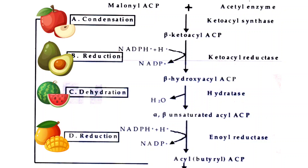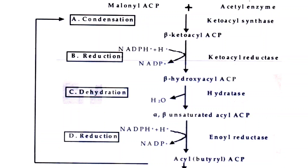Elongation involves four reactions: condensation, reduction, dehydration, and a second reduction. During elongation, 2-carbon units are added to the growing chain, and all reactions occur while the reactant molecules remain attached to the ACP. In the first reaction — condensation — the acetyl and malonyl units condense to give a 4-carbon compound called beta-ketoacyl-ACP, releasing 1 carbon as carbon dioxide. In the second reaction — reduction — beta-ketoacyl-ACP is reduced to beta-hydroxyacyl-ACP, requiring NADPH.